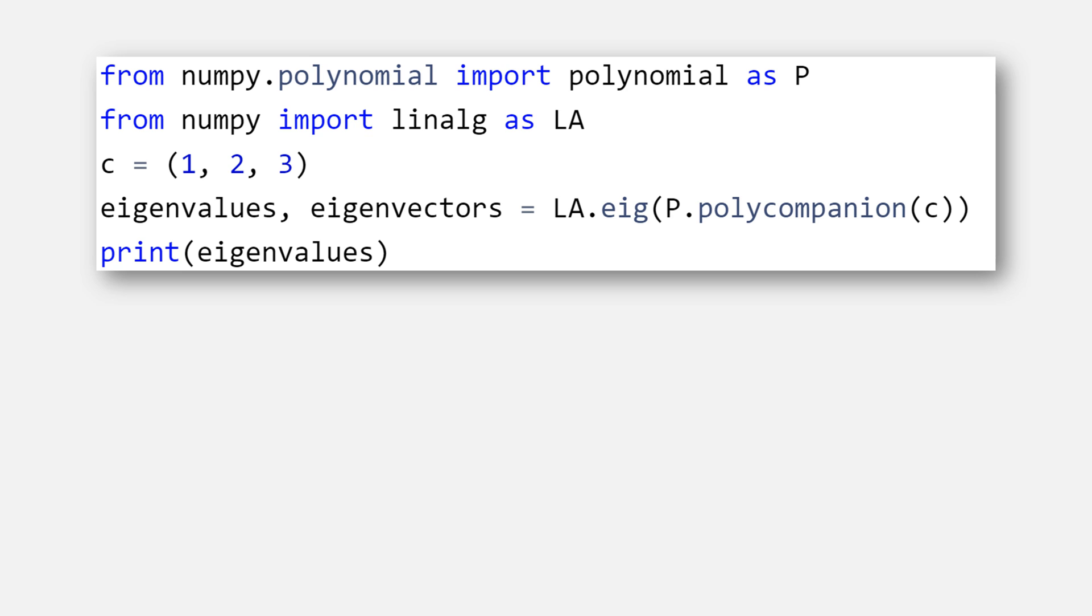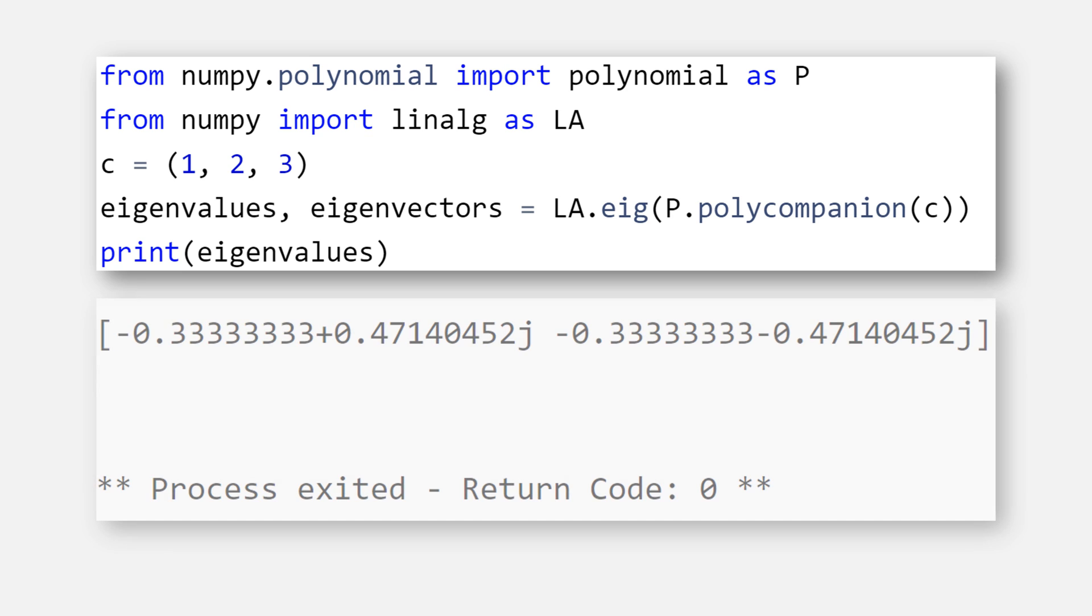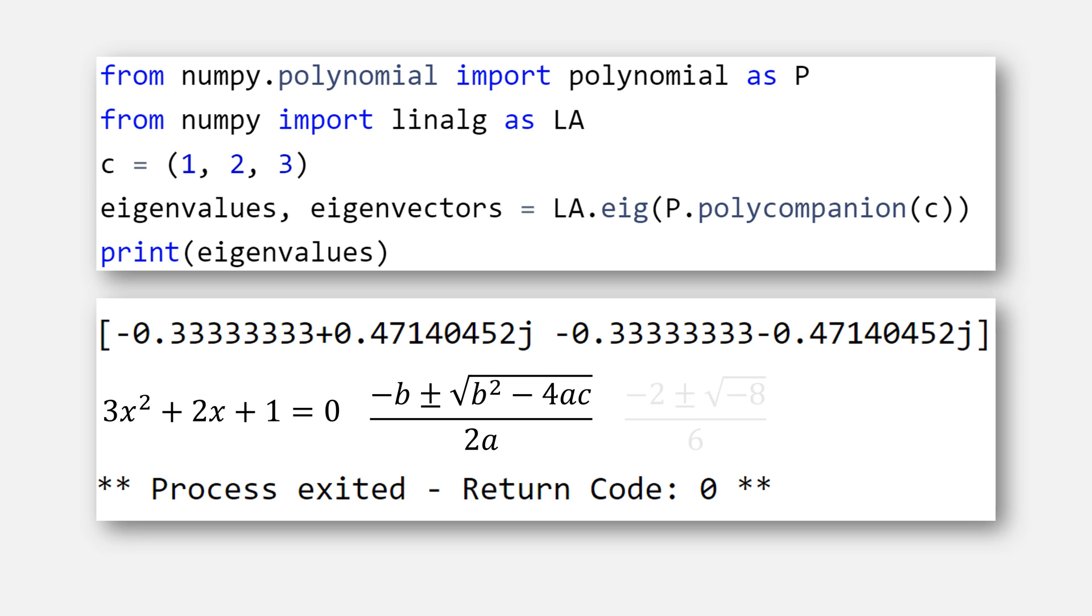And then, going back to the eigenvalues of the companion matrix, here is the result that you get. Just to double check our work for our polynomial of 3x squared plus 2x plus 1, plugging everything into the quadratic equation gives us that answer.